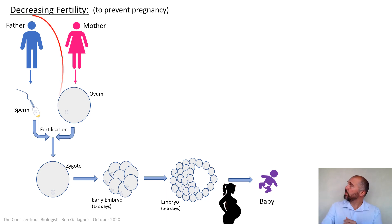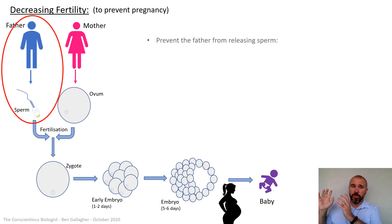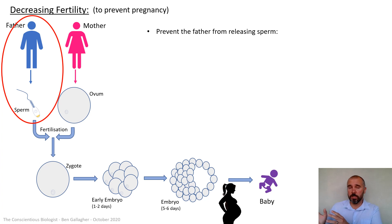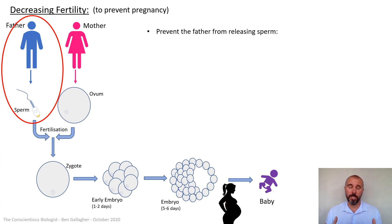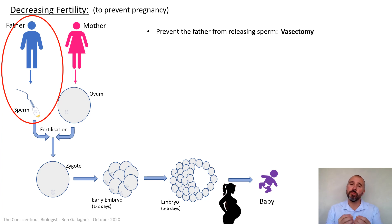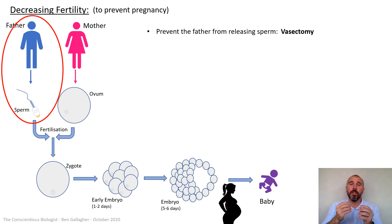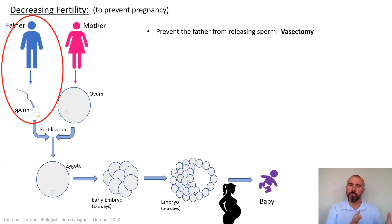The first thing we could do is try to prevent the man from producing sperm. If the man can't produce or release sperm there's not going to be sperm to fertilize the eggs. The only real way to do this is a pretty permanent solution called a vasectomy — an operation where the tubes from the testes, called the vas deferens, are severed. If they're cut and tied off then the sperm can't travel out of the testes down the penis to go into the woman at intercourse, so she's not going to get pregnant.